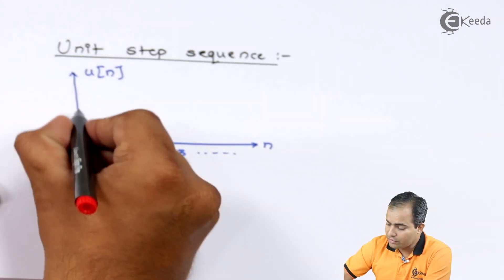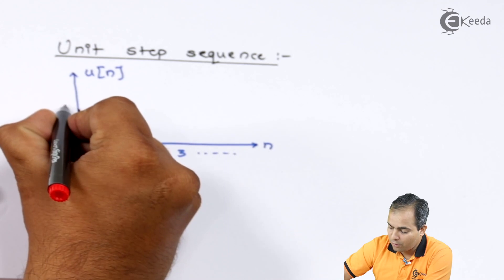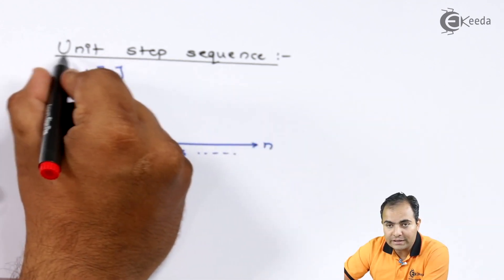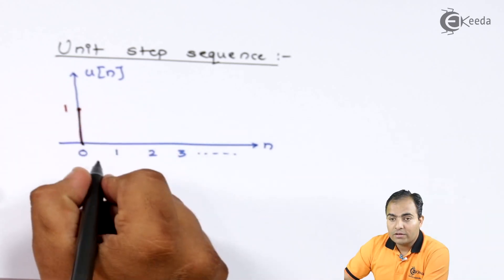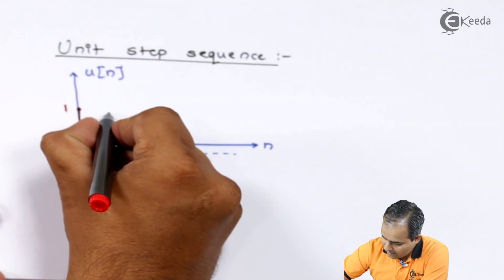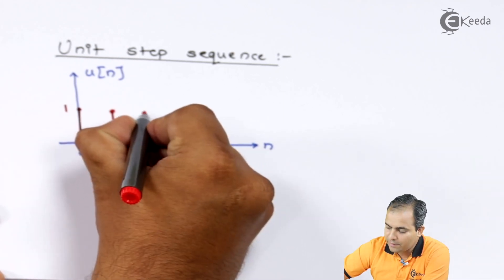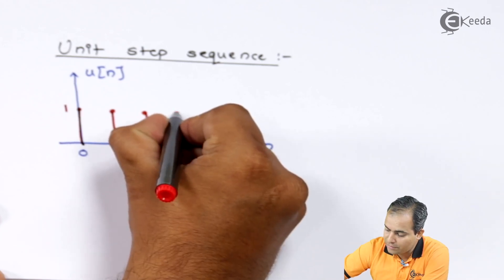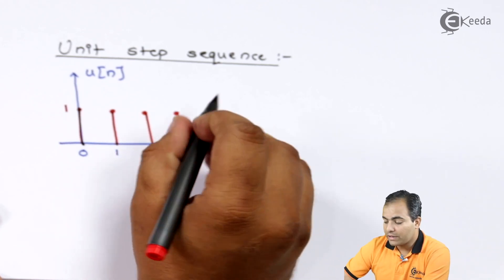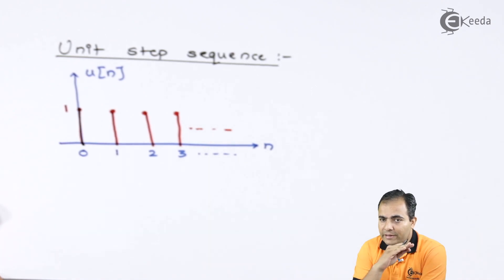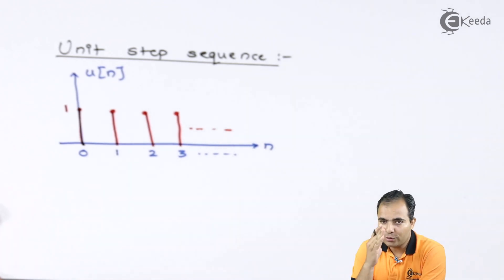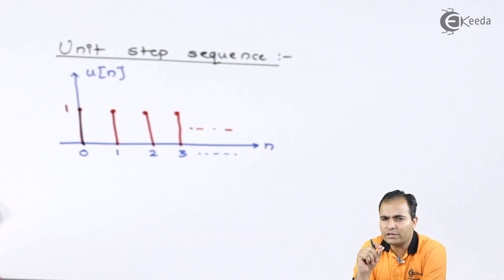At n equals 0 the amplitude is 1, since this function is a unit step. Similarly, for n equals 1 the amplitude is the same — 1. For n equals 2 the amplitude is the same, and for n equals 3 the amplitude is the same, and so on. Step means the amplitude remains the same, and since it is a unit step, the amplitude remains 1. Sequence means you plot the graph in discrete format, where amplitude is only available at each instance of time.